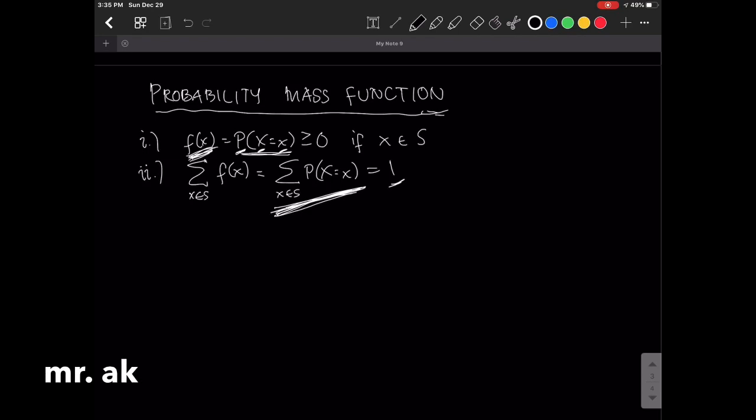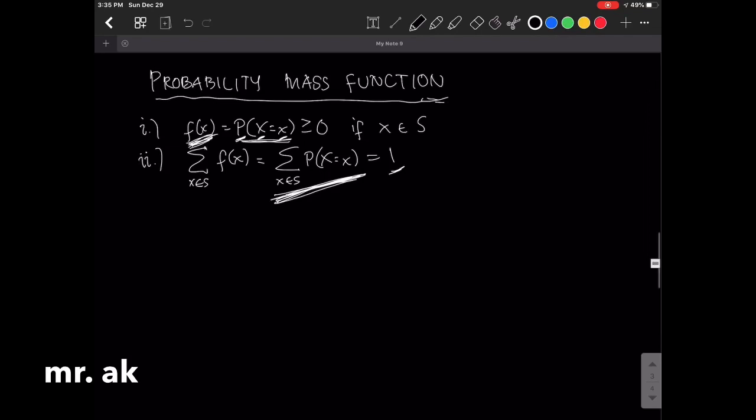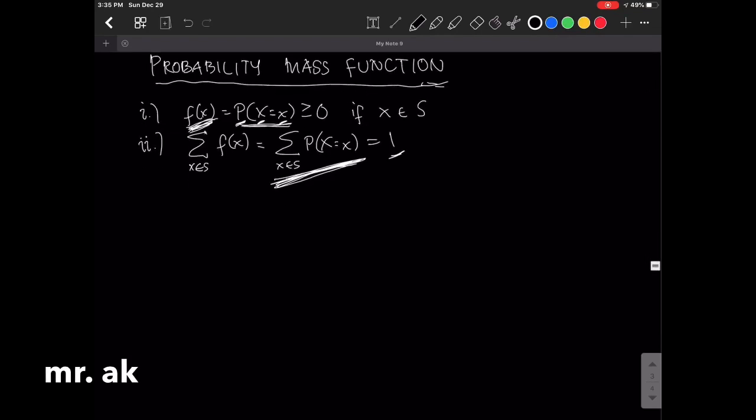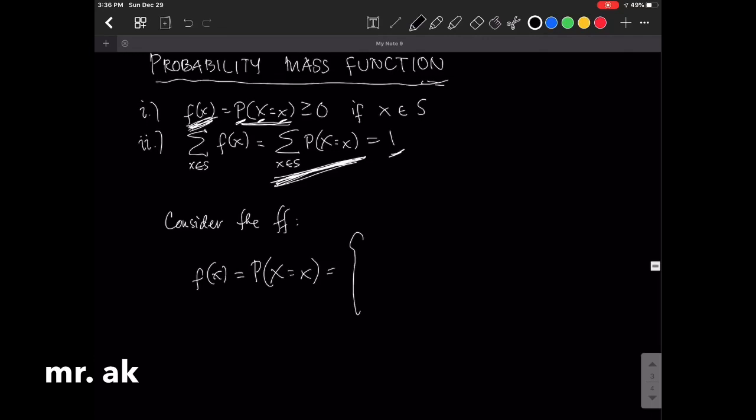Okay, now I have here a problem. Consider the following. I have f(x) equal to the probability of x, because x is equal to—so this is a function,